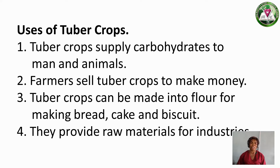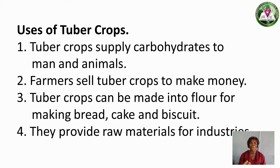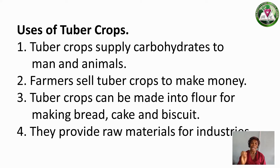From tuber crops we can get bread, cake, or biscuits after processing. You can't get them from the farm and have them automatically become bread — you must process them into bread, into cake, into biscuits.